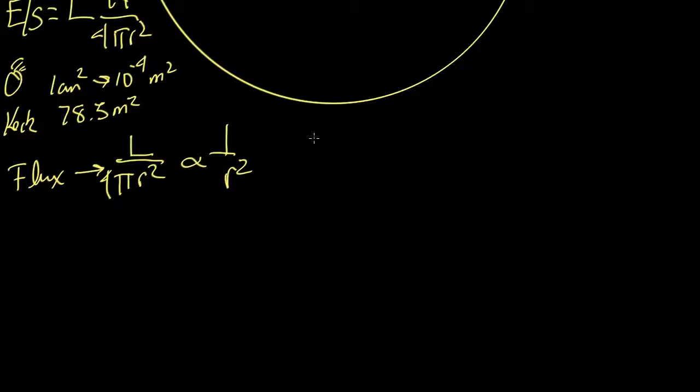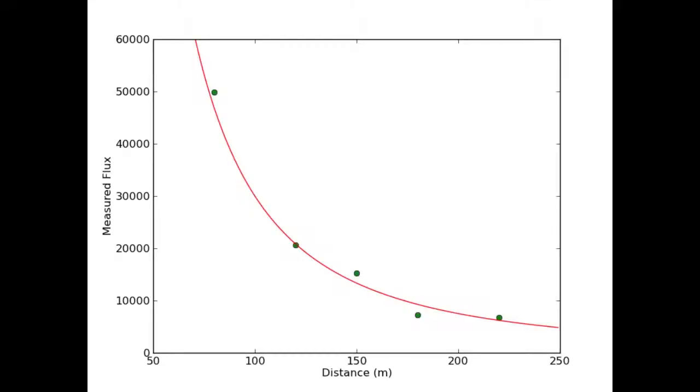But those details don't really matter if you use the same telescope or camera. And that's the case, of course, that we have in our picture of Anzac Parade. So, let's see how well this 1 over r squared prediction fits our data. So, here's that 1 over r squared curve plotted over the data that we collected on Anzac Parade. And you can see that while the curve does not perfectly fit the data, it seems reasonably to explain what's going on.